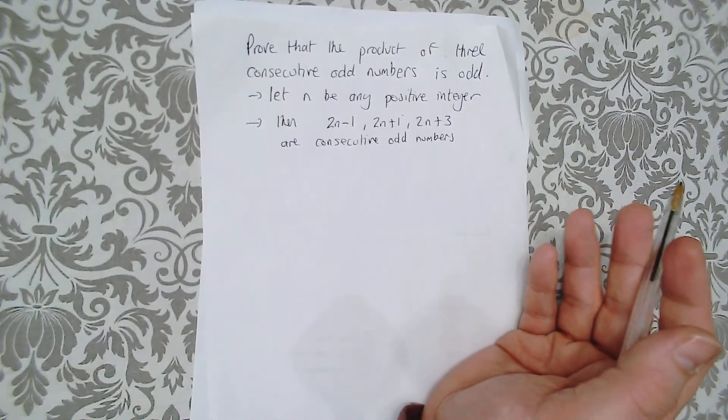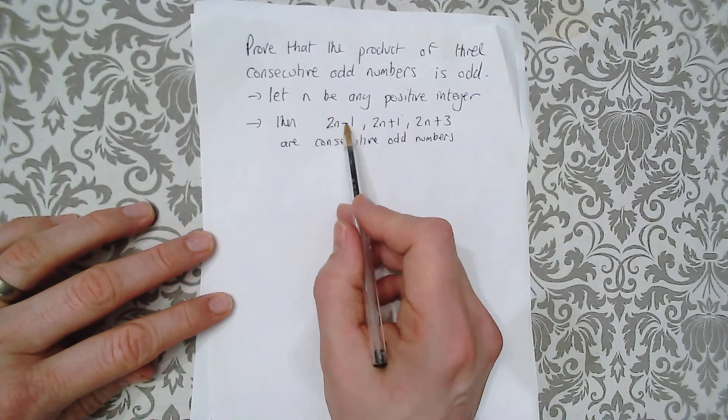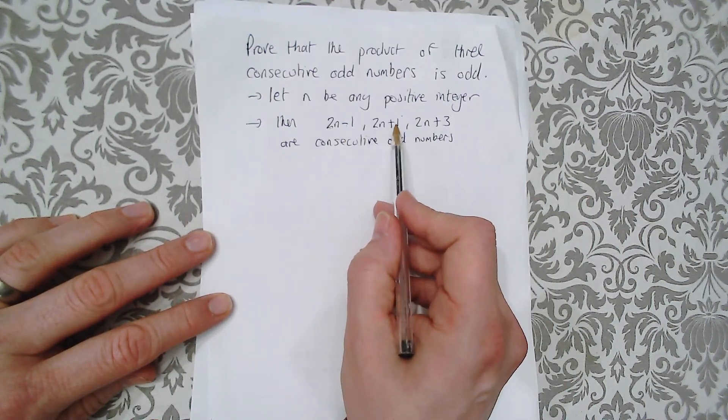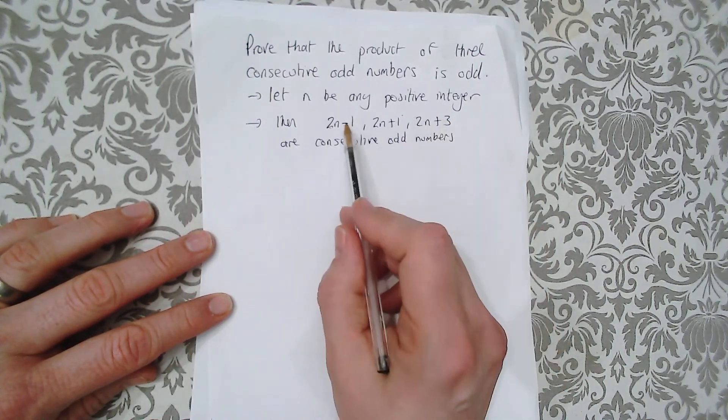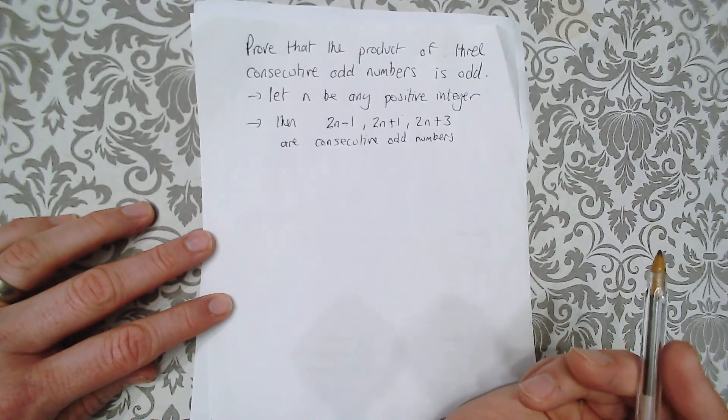Because this is 2n minus 1 and you've got 2n plus 1, 2n plus 3, they're all two apart, so they're consecutive odd numbers.